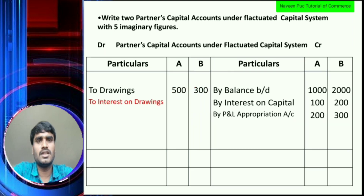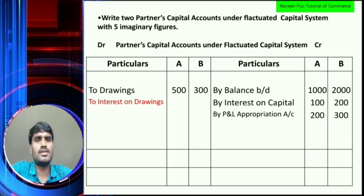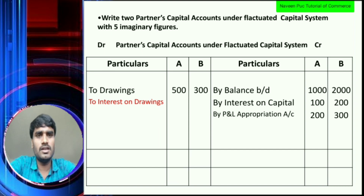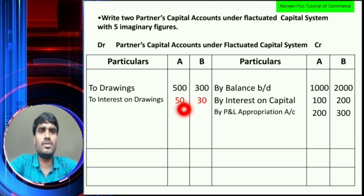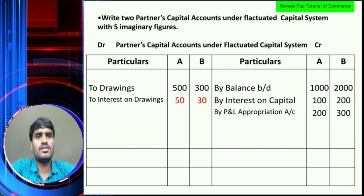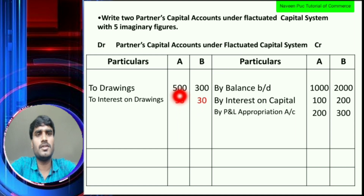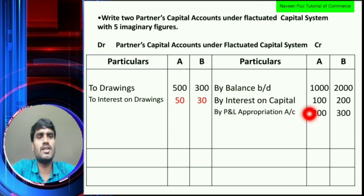Next item is interest on drawings. Interest on drawings: 10% gives Rs. 50 for Partner A and Rs. 30 for Partner B. So by balance brought down, interest on capital, profit and loss appropriation account, drawings, interest on drawings — that gives 5 items.